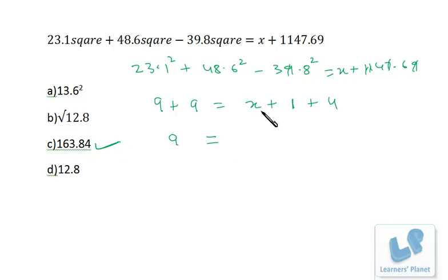So we are left with 4. So digital root of x is 4. So 163.84 is definitely the correct choice. So by digital root method or by unit digit method, either way you can go and solve this problem simply. I hope you are clear.